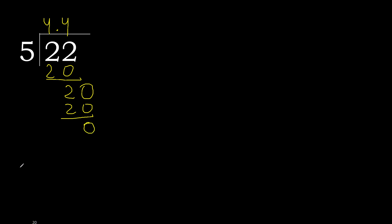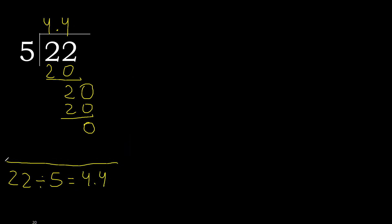0, therefore finish. 22 divided by 5 equals 4.4 — finish.